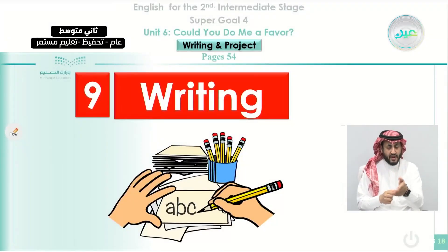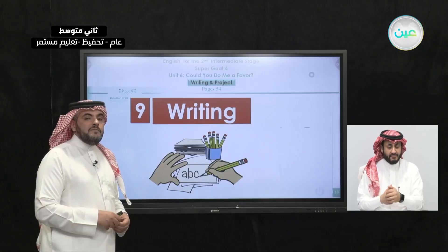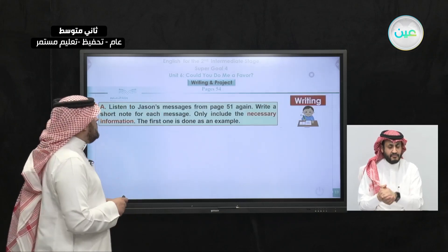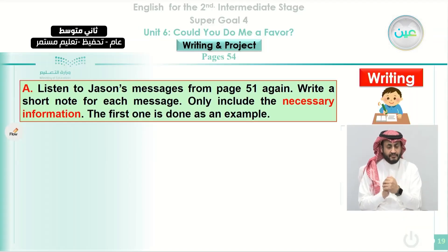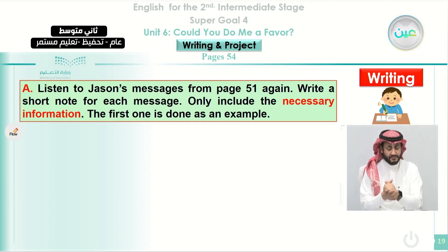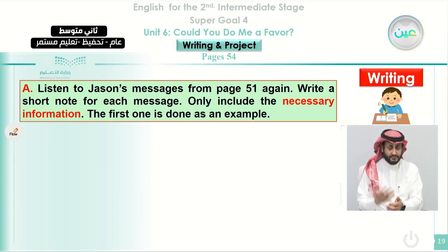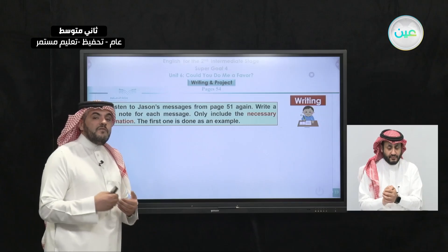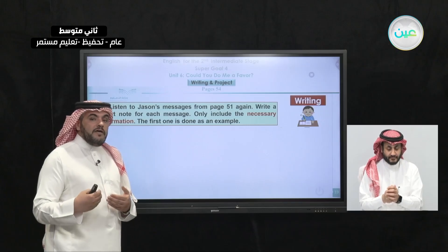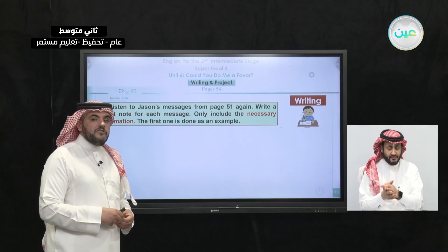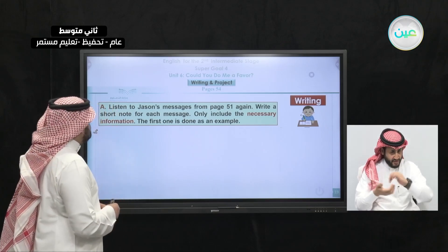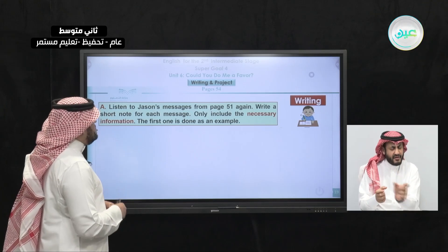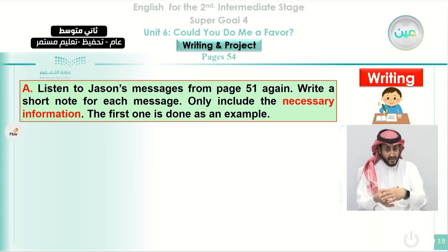Today we are going to start our main class, which is about writing. We're going to study how to report messages. Listen to Jason's messages from page 51 again — that is the listening section from before. We studied some messages given by four of Jason's friends. We need to write short notes for each message and include the necessary information. The first one is done as an example for you.